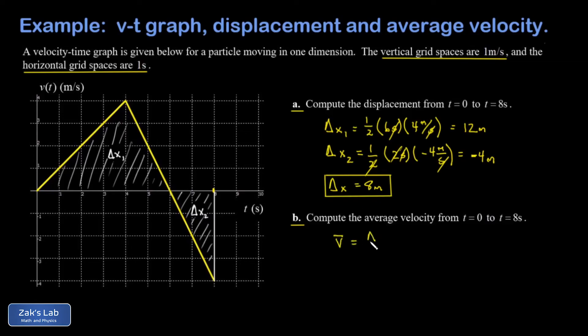Average velocity is just what was the displacement - that's delta x - divided by how long it took - that's delta t. We already got the hard work done. The displacement is eight meters, the time it took to move eight meters was eight seconds, and I get an average velocity of one meter per second.